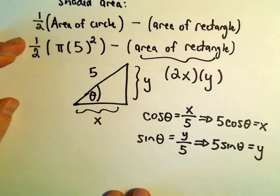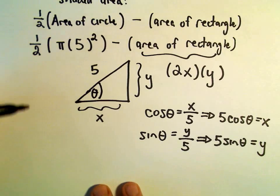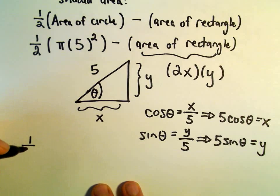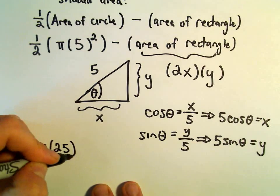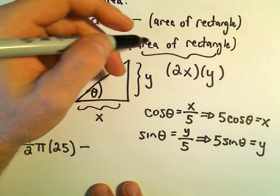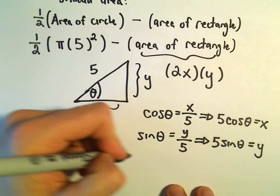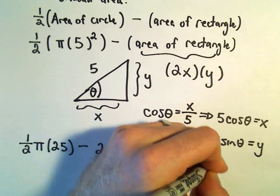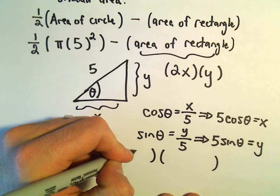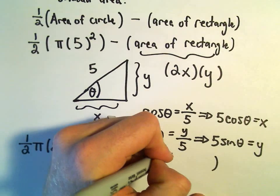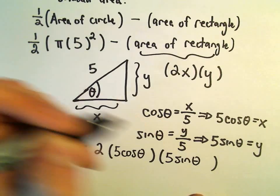And now we're basically in business. We just have to fill in this formula. So it says we've got 1 half times pi times 5 squared, which is going to be 25, minus the area of the rectangle, which is going to be 2 times x times y. But x is just 5 cosine theta. Y is just 5 sine theta.